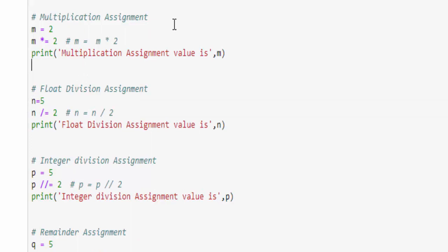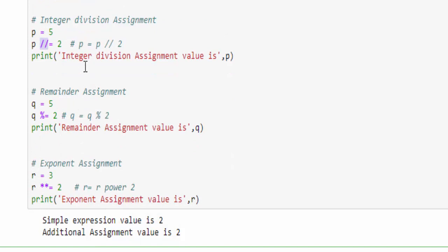Then for multiplication assignment, m equal to 2. Instead of m equal to m into 2, we can write m star equal to 2. So the output will be m equal to 2 into 2, which is 4. Then for division, same way, n equal to single slash equal to 2. So n equal to 5 by 2, which is nothing but 2.5. If we mention single slash, you will get the decimal points value. If we mention double slash, we will get only the output 2. We will not get the decimal points.